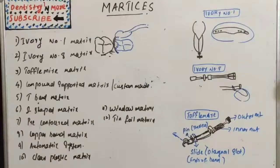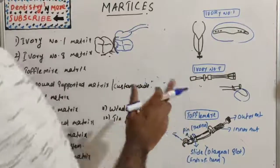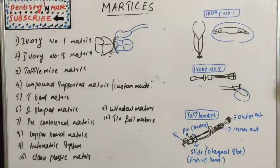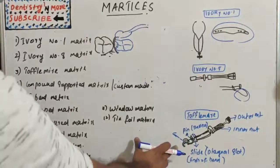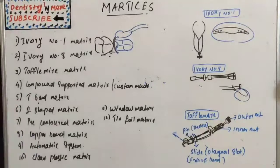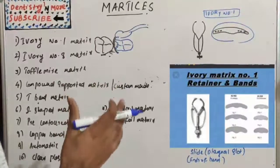Mainly we'll be studying ivory number one, ivory number eight, and Toffelmyer. Toffelmyer is most commonly asked as an essay question — the parts, drawing the picture, labeling the parts, and explaining the function of each part. Let's start with ivory number one matrix.